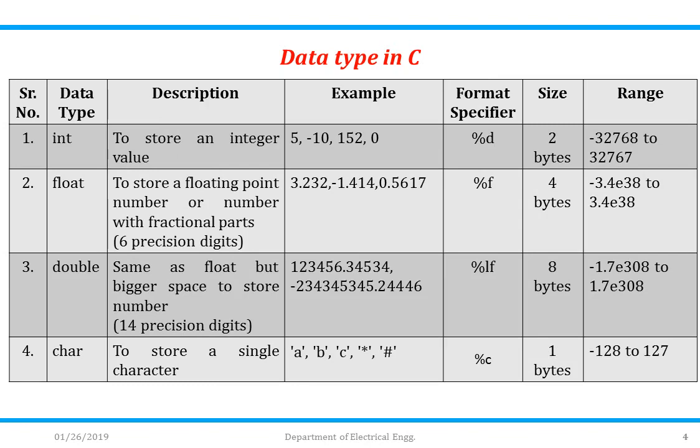Here this is a table of data types used in C. First one is integer. It is used to store an integer value, for example 5, minus 10, 152. The format specifier for integer is %d, having size of 2 bytes. Its range is from minus 32768 to 32767.